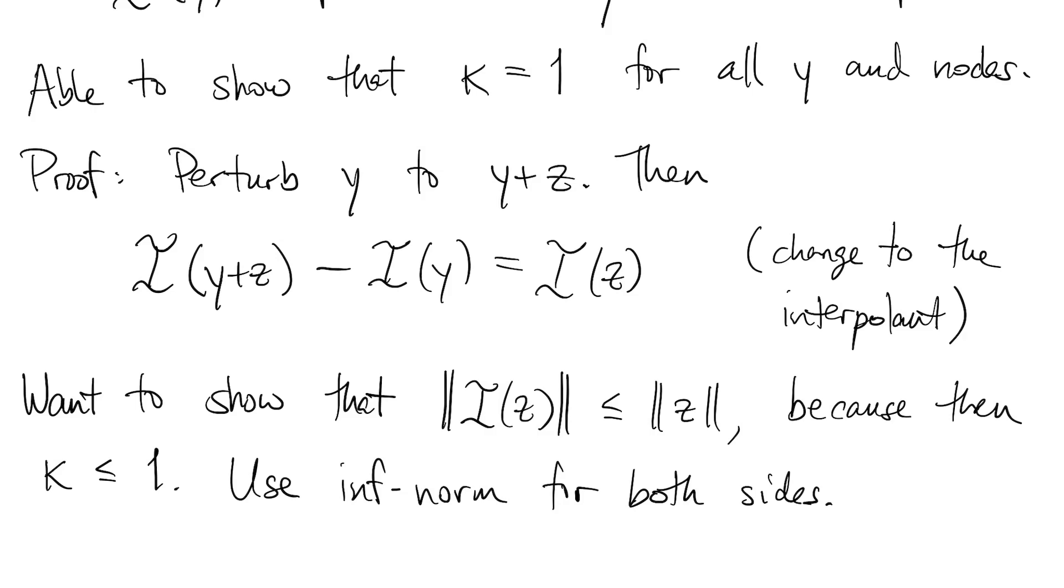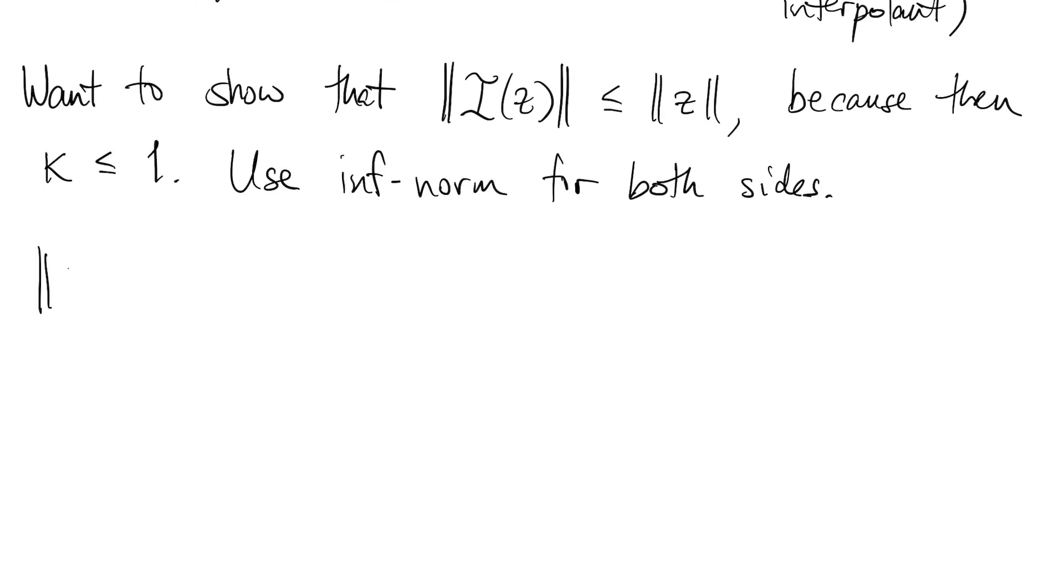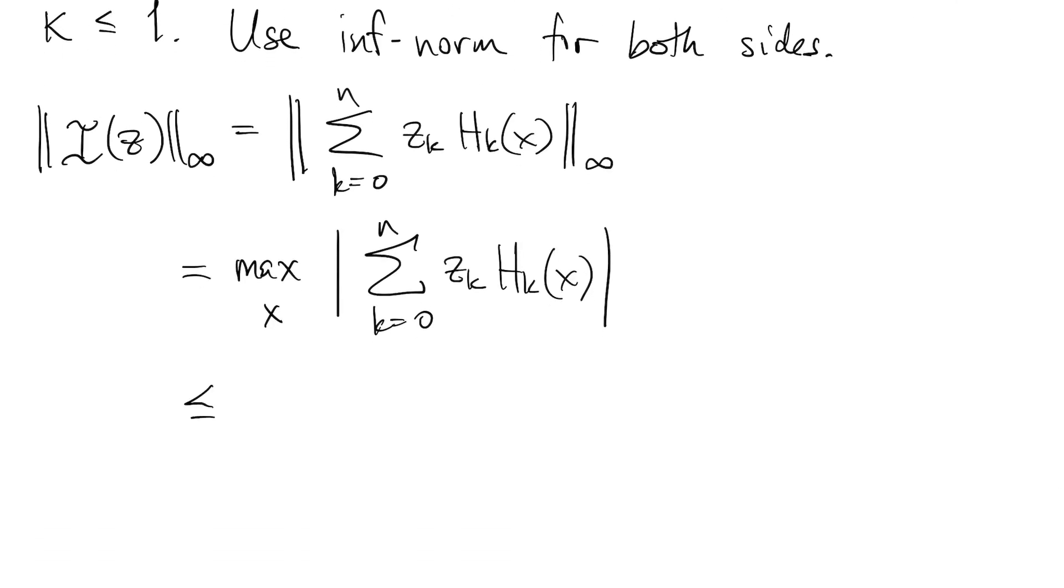We'll use the infinity norm both on the function i of z and on the data vector z. So the infinity norm of i of z, by definition, is the maximum of its absolute value.